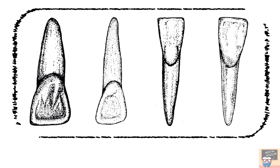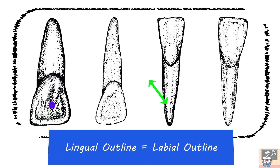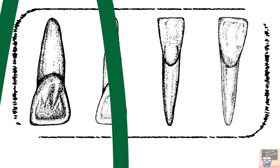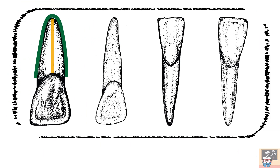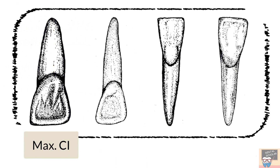Let's now go to the lingual aspect of these teeth. In the first tooth, you will notice that the crown is downwards. The lingual fossa is shallow and broad. The outline of the crown resembles the general outline on the labial aspect. The root appears conical, straight, and with a rounded apex. So all these features indicate that the tooth is a maxillary central incisor.